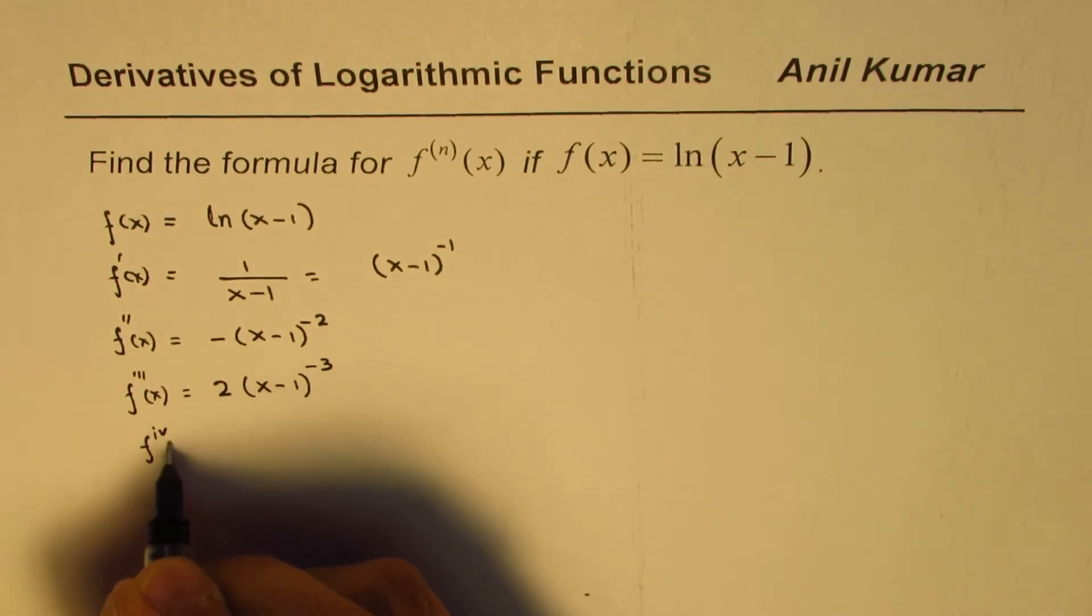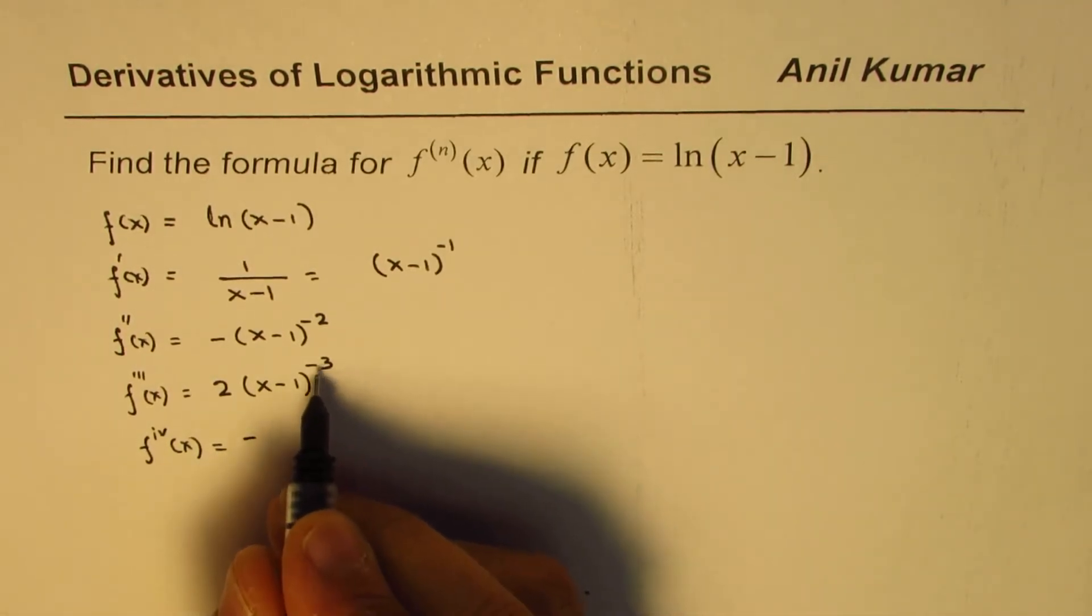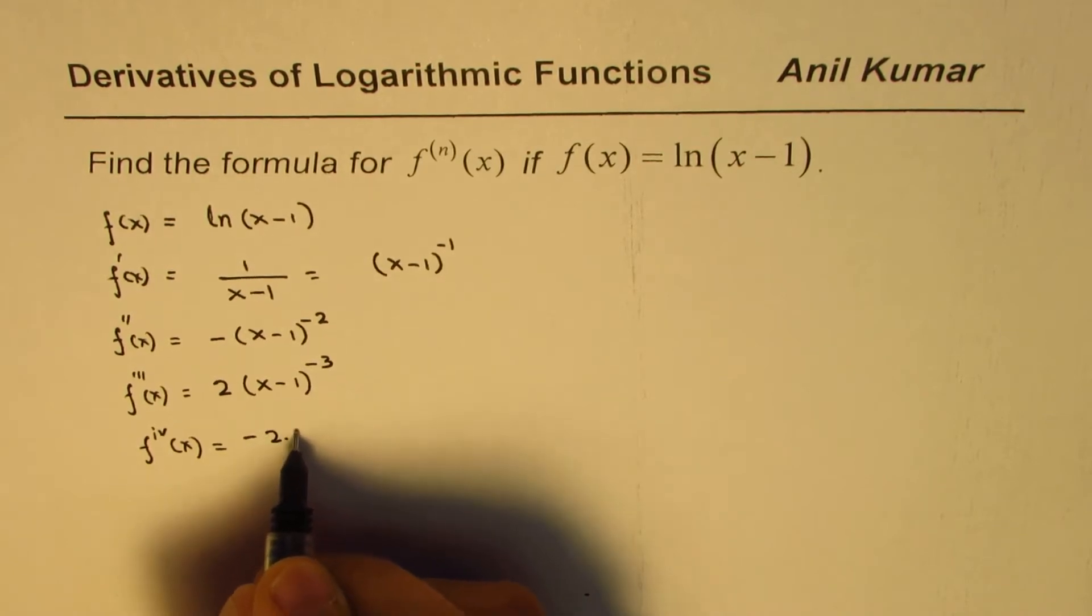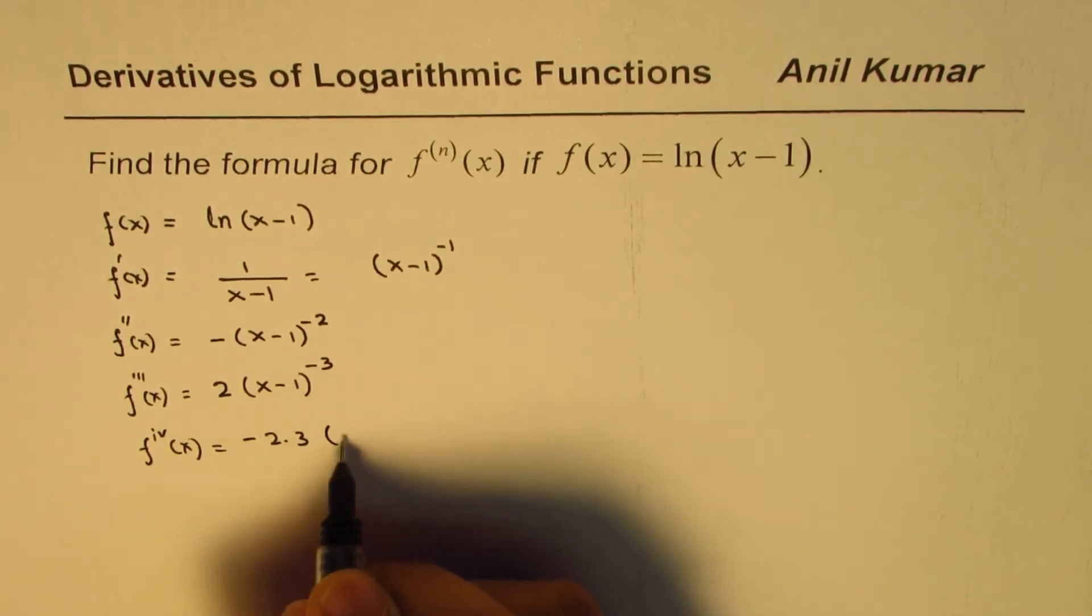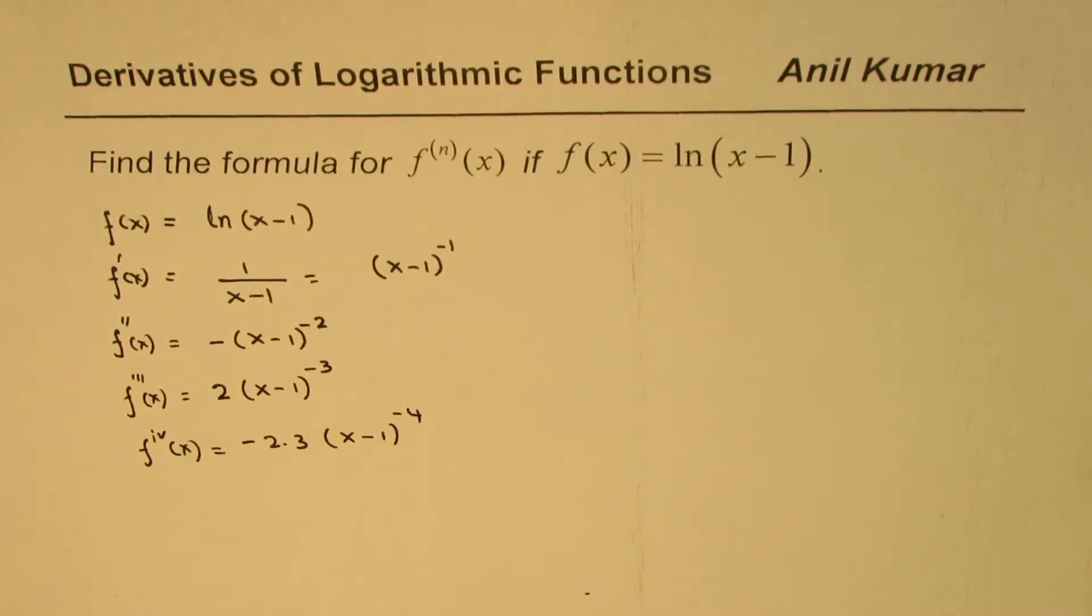The fourth derivative of this function will be minus, that minus 3 times 2, so we could write 2 times 3, which is 6, (x-1) to the power of minus 4.